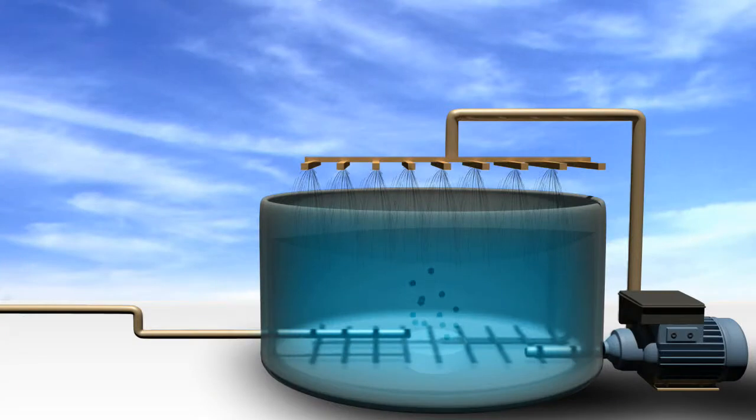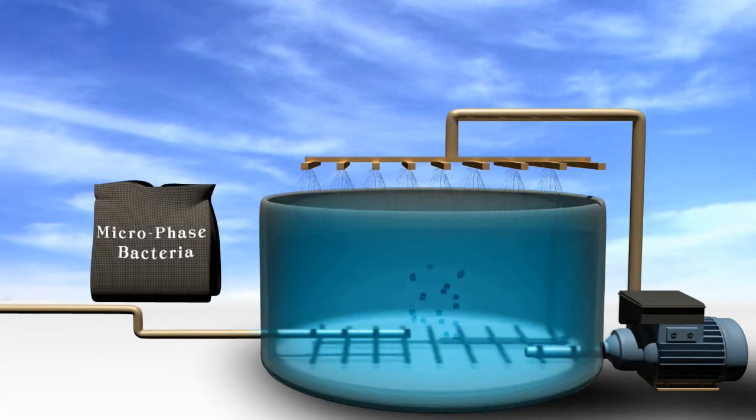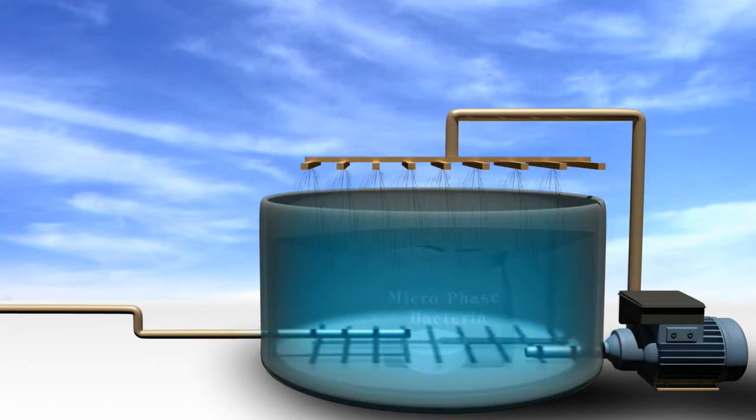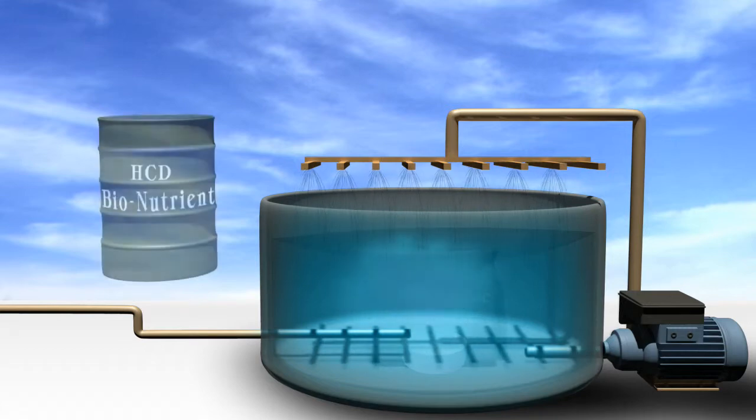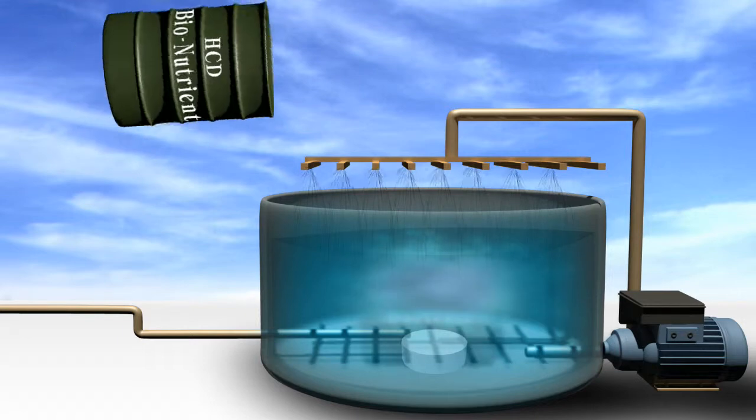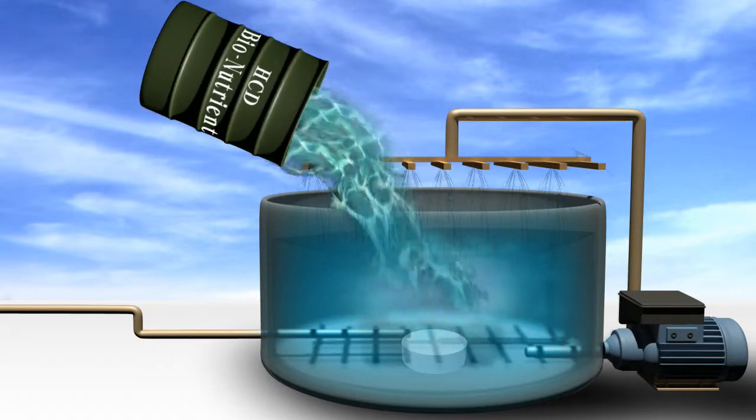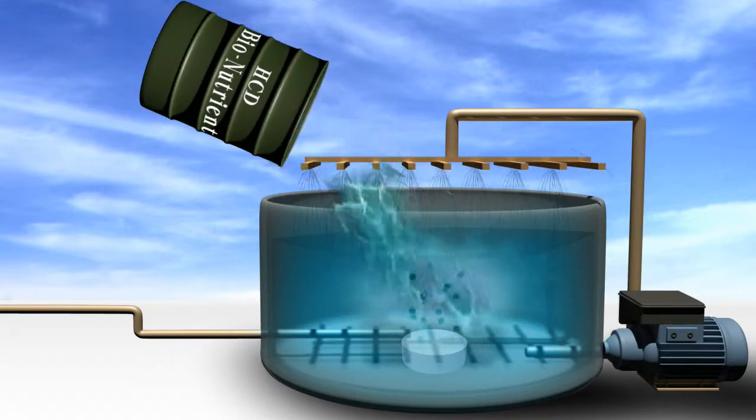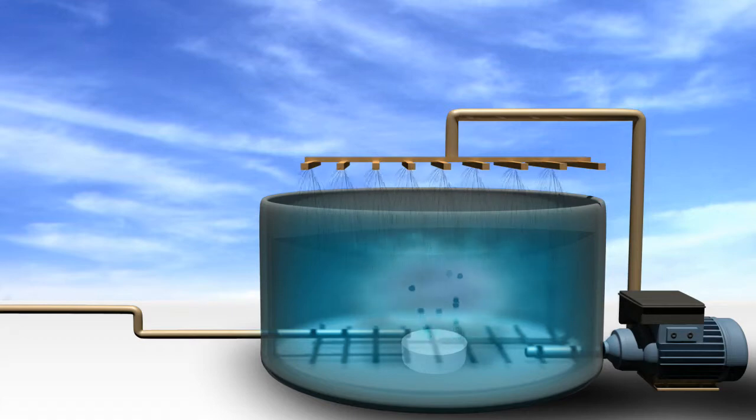Prior to the actual HCD tri-phase EOR application downhole, we must grow up the bacteria to 10 to the 8th to 10 to the 9th colony forming units per milliliter. This is done by adding 5 pounds of the micro-phase bacteria product to typically a 300-gallon tank, along with 5 gallons of the HCD bio-nutrient, and allowing it to recirculate for about 24 hours.